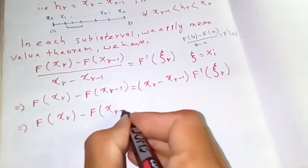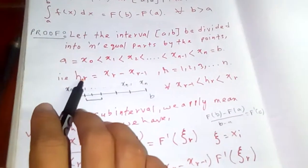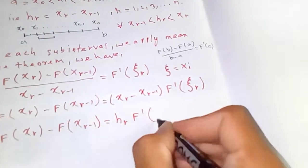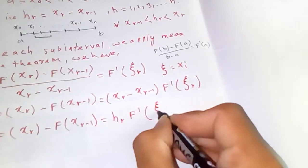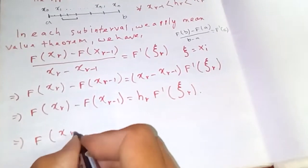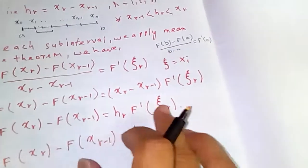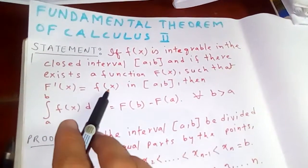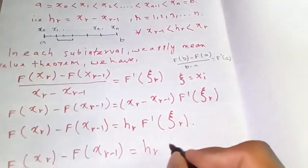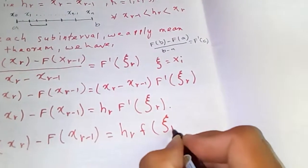So simplifying, F(x_r) minus F(x_{r-1}) equals (x_r minus x_{r-1}) times F'(c_r). Since F'(x) = f(x), we substitute F'(c_r) = f(c_r). Therefore, F(x_r) minus F(x_{r-1}) equals h_r times f(c_r).